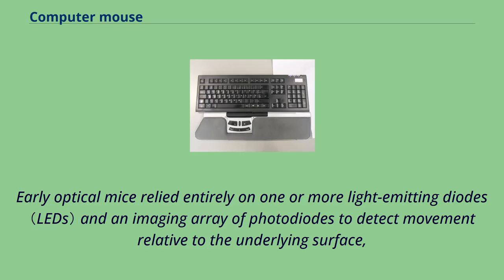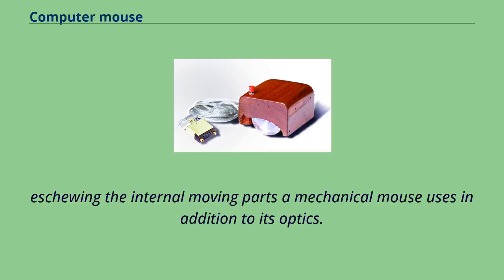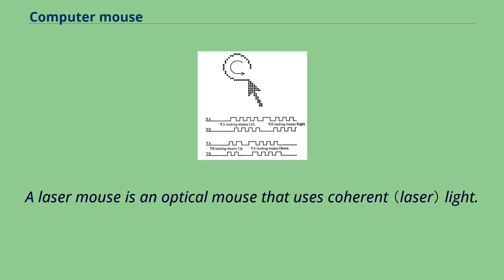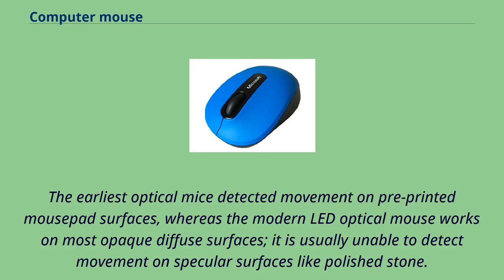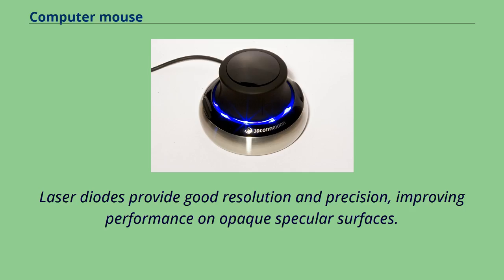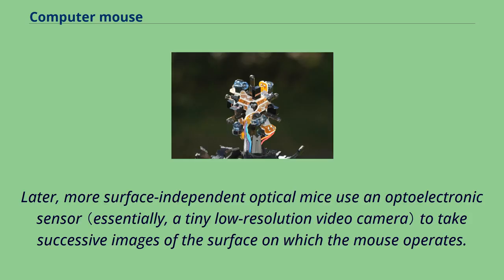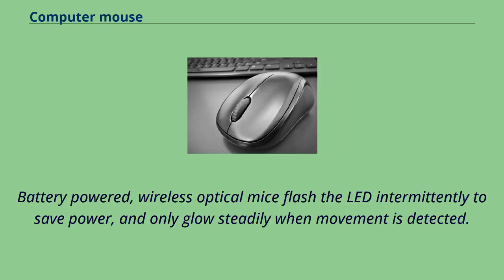Early optical mice relied entirely on one or more light-emitting diodes and an imaging array of photodiodes to detect movement relative to the underlying surface, eschewing the internal moving parts a mechanical mouse uses. A laser mouse is an optical mouse that uses coherent light. The earliest optical mice detected movement on pre-printed mousepad surfaces, whereas modern LED optical mice work on most opaque diffuse surfaces but cannot detect movement on specular surfaces like polished stone. Laser diodes provide good resolution and precision, improving performance on opaque specular surfaces. More surface-independent optical mice use an optoelectronic sensor to take successive images of the surface. Battery-powered wireless optical mice flash the LED intermittently to save power, glowing steadily only when movement is detected.